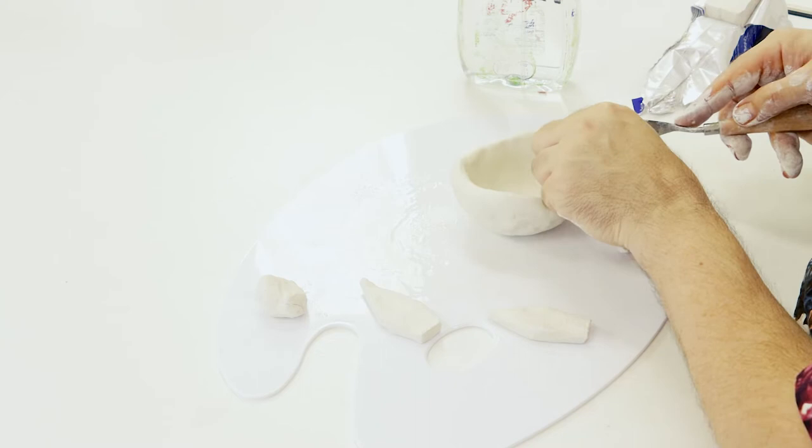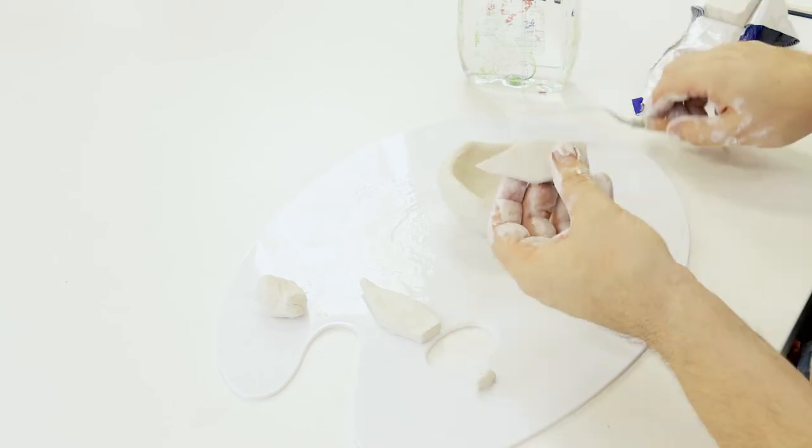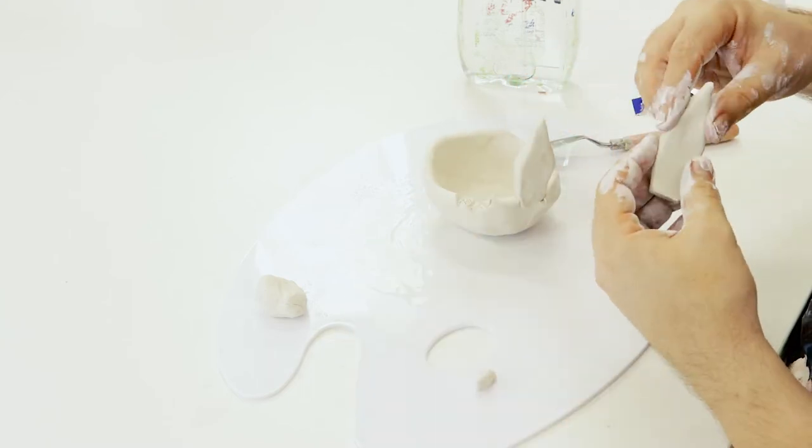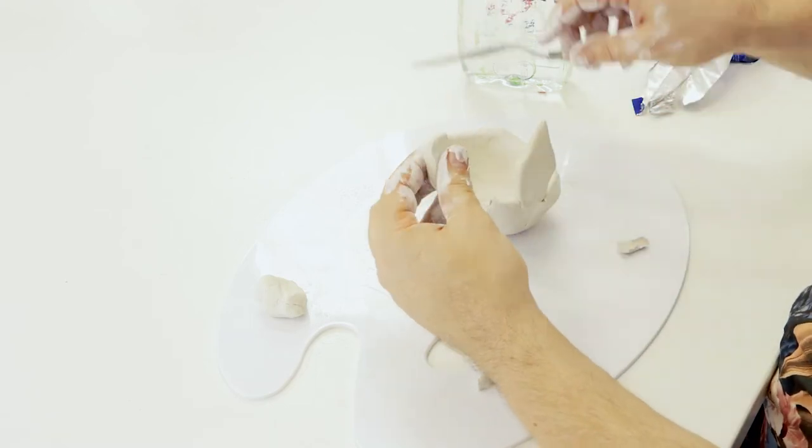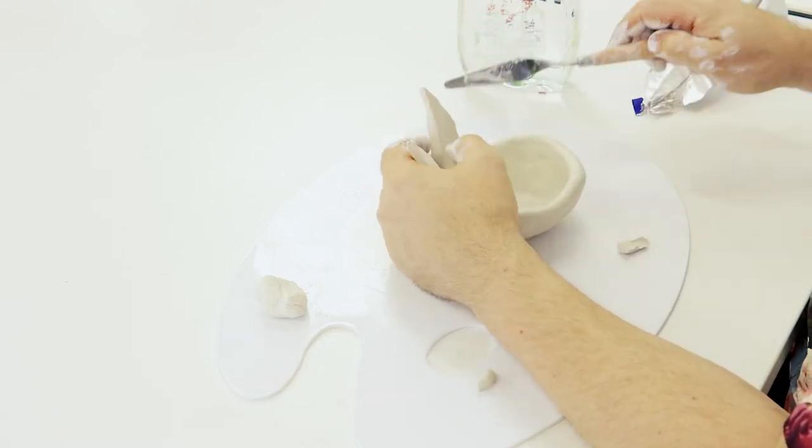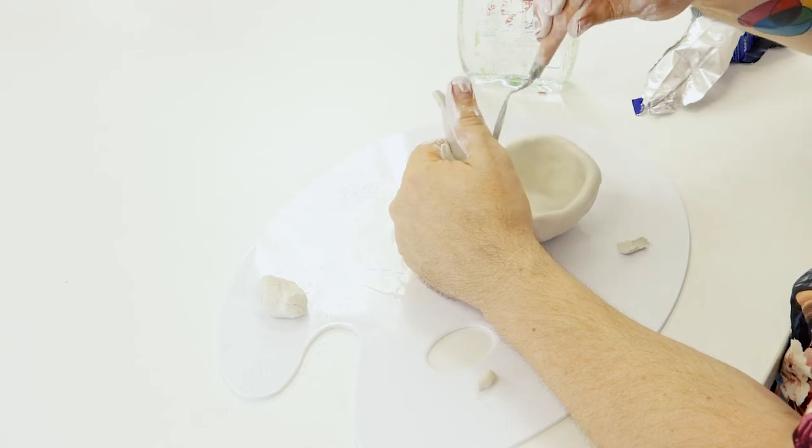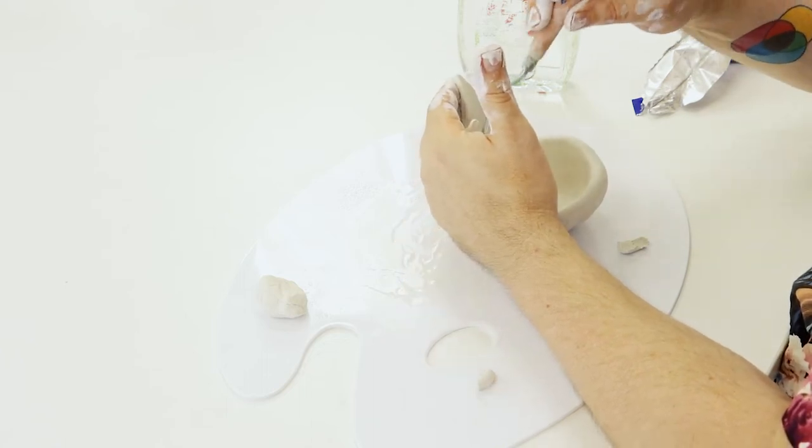Roll the edges of the ear then attach them to the bowl. To make the bond stronger it's a good idea to cut out a section in the cup and insert the ears into this cut out. Then smooth the clay up from the cup onto the ear.